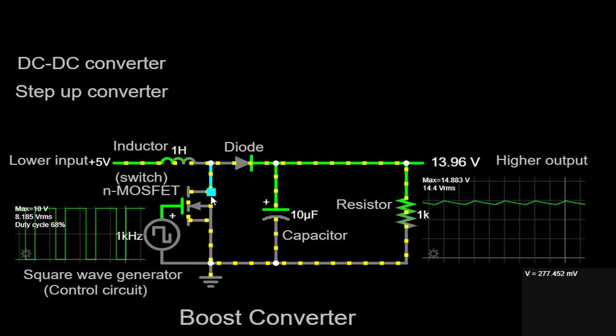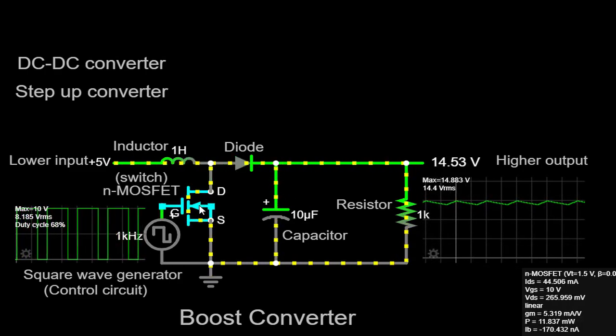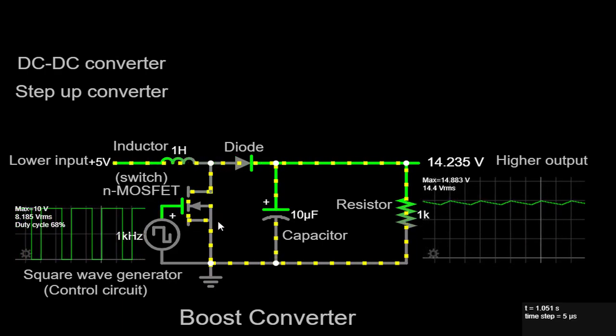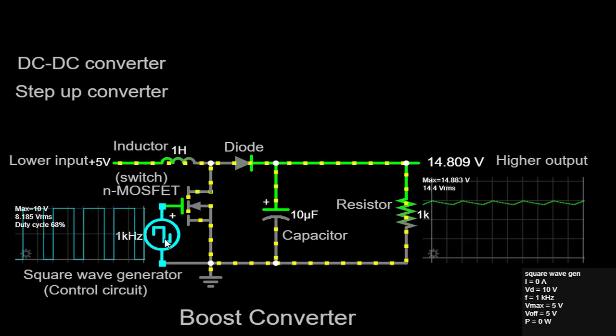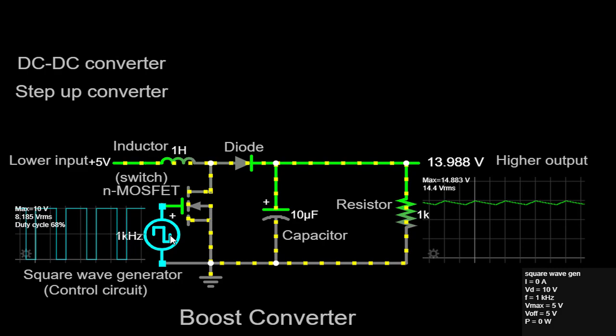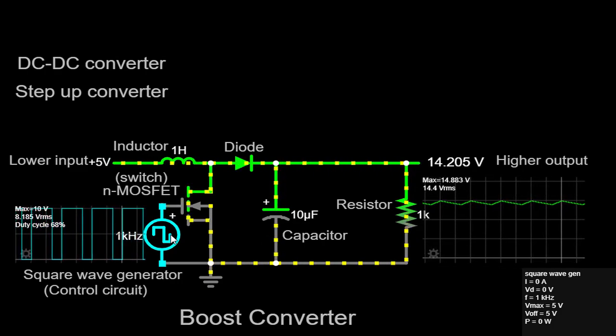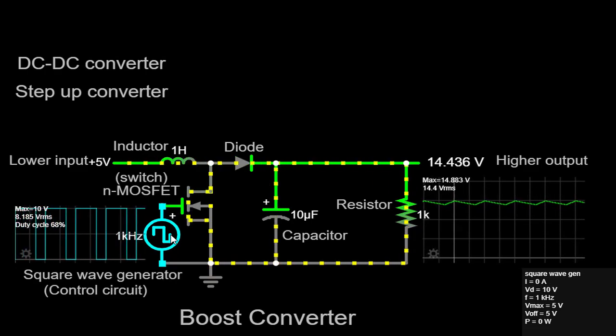The drain of an N MOSFET, a type of power transistor, is connected to the inductor. The gate and source of the MOSFET are connected to a 5V square wave generator. This square wave generator will control the switching of the MOSFET, which is the key aspect of the boost converter's operation.